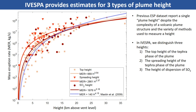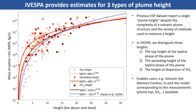For comparison, the Mastin et al. 2009 relationship — one of the most popular — is also shown, and it compares fairly well with the new relationship for top height. This relatively simple improvement means that iVespa potential users, such as volcanic ash advisory centers, can now pick the data and power law fit that match the type of measurement they have for a particular eruption. For example, if they have the spreading height but not the top height, they can now use the orange fit specifically.